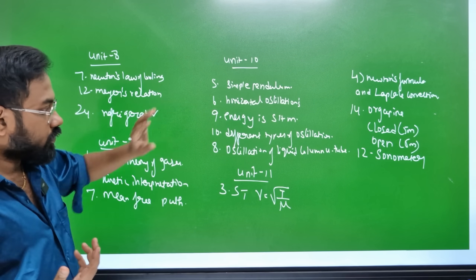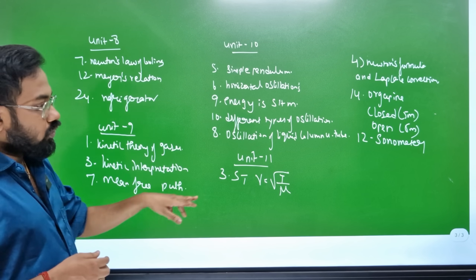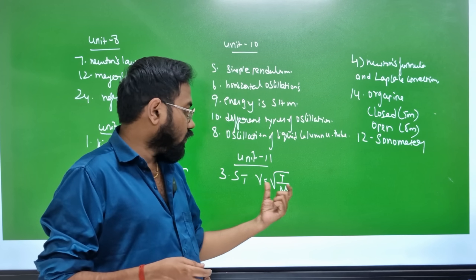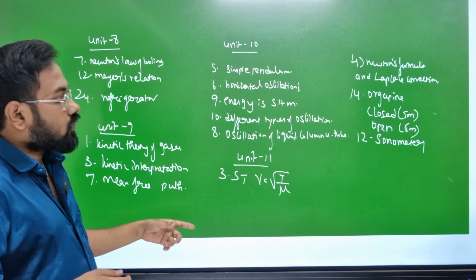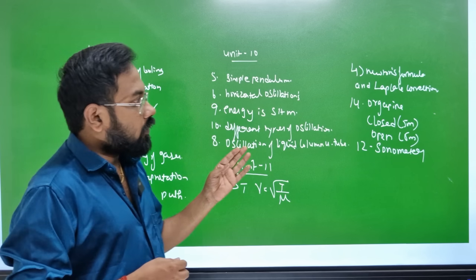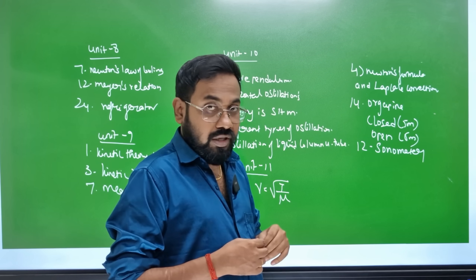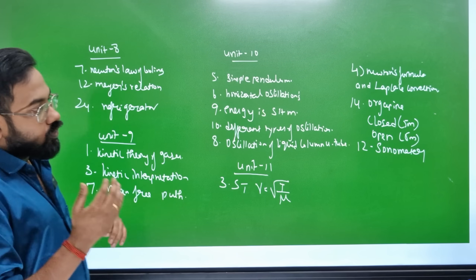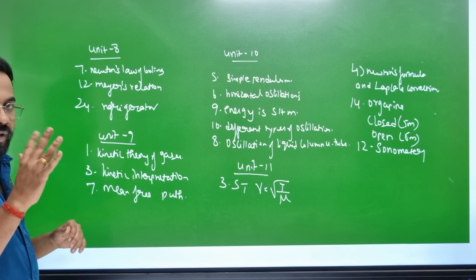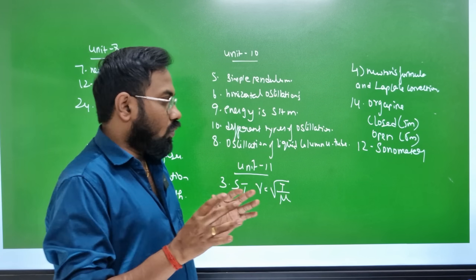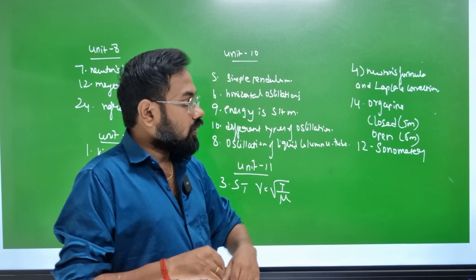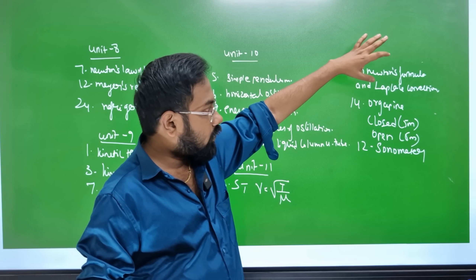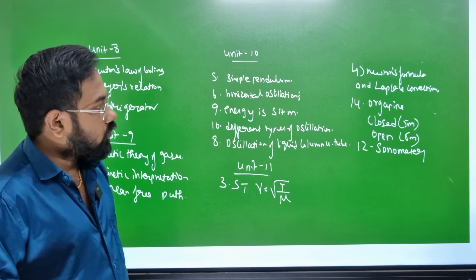Unit 11 includes wave topics from the textbook. Newton's Formula and Laplace Corrections are very, very important. Also covered are Organ Pipe — Closed Pipe and Open Pipe — carrying 2 and 35 marks respectively. Sonometer is noted as a weak area.